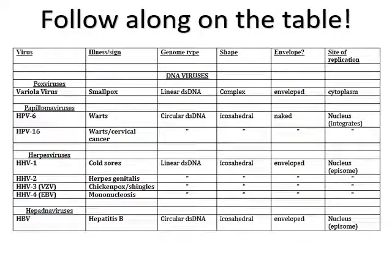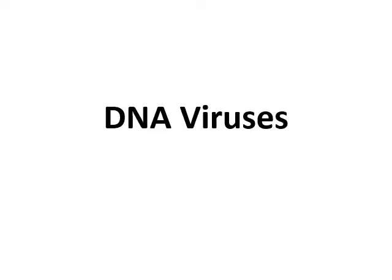In the notes for this week you have two tables: one lists all the viruses by virus type, and the other lists them by viral tropism — basically which organ system or tissue type they infect. Let's start with the DNA viruses.